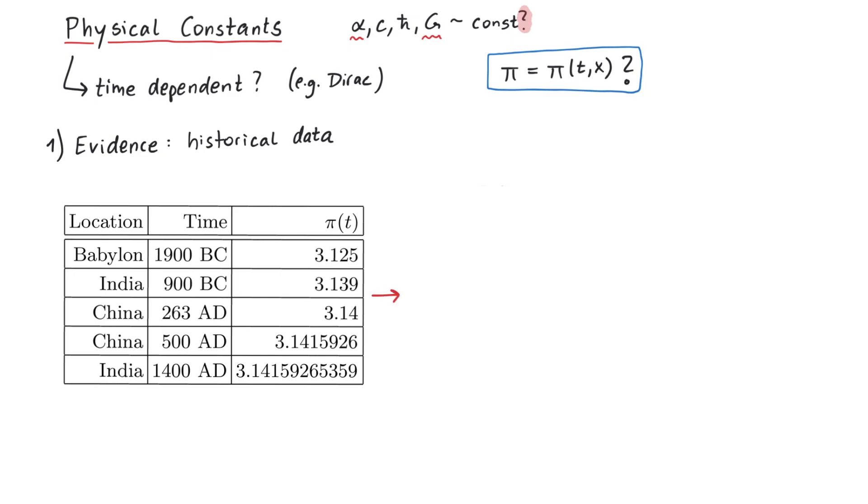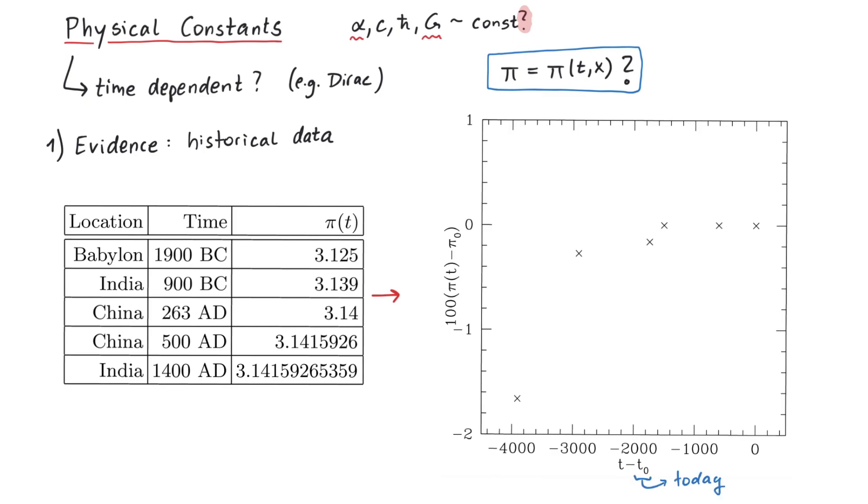When you plot this data, it looks like this, where the horizontal axis shows time relative to our present day, and the vertical axis shows the difference between the observed value of pi and today's accepted value, magnified by a factor of 100. As you can see, there is a clear time dependence.